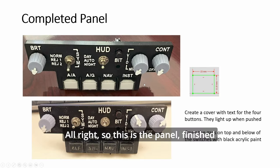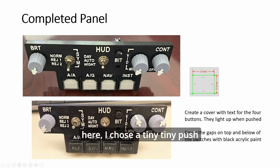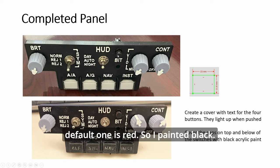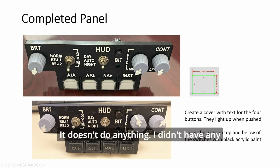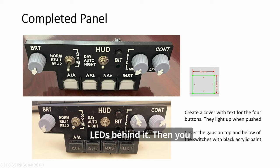All right. So this is the panel. Finish product. As you can see here, I chose a tiny, tiny push button. Paint it black. I think the default one is red. So I paint it black. Then this is just a hole. It doesn't do anything. I didn't have any LEDs behind it. Then you push this. It will light up. Okay?